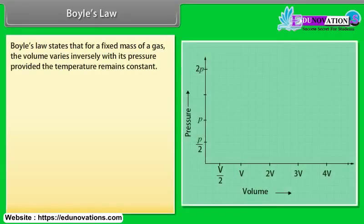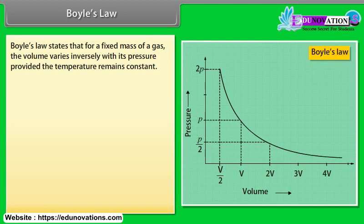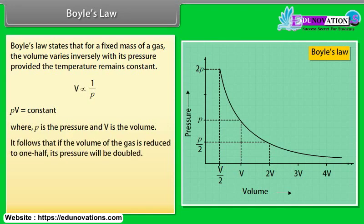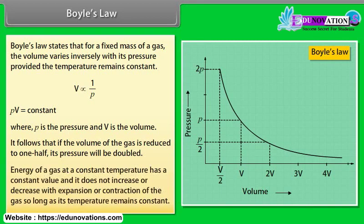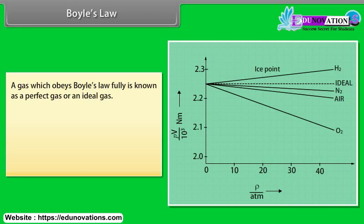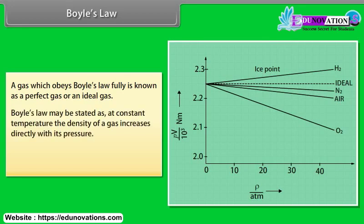Boyle's law states that for a fixed mass of a gas, the volume varies inversely with its pressure provided the temperature remains constant. PV is equal to constant, where P is the pressure and V is the volume. It follows that if volume of the gas is reduced to one half, its pressure will be doubled. Energy of a gas at a constant temperature has a constant value and it does not increase or decrease with expansion or contraction of the gas so long as its temperature remains constant. A gas which obeys Boyle's law fully is known as perfect gas or an ideal gas. Boyle's law may be stated as at constant temperature, the density of a gas increases directly with its pressure. P upon rho is equal to constant.